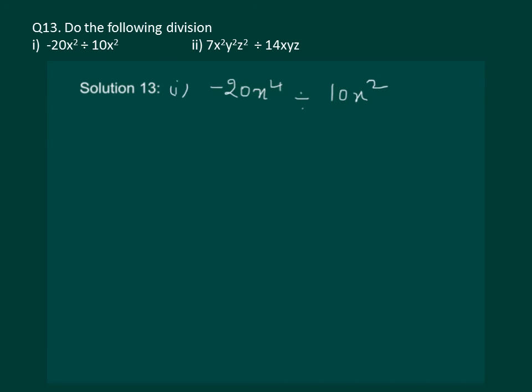Let us read the question. Do the following division. Minus 20x power 4 divide by 10x square.